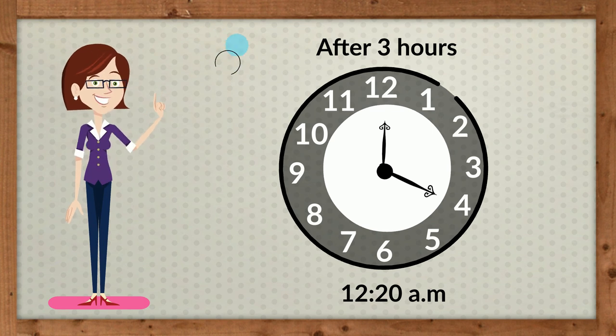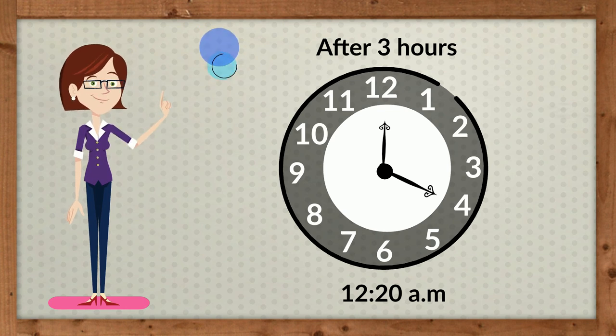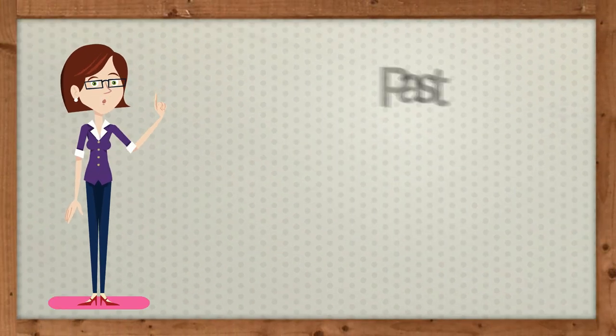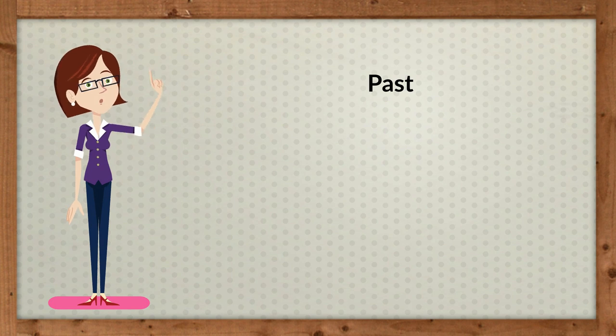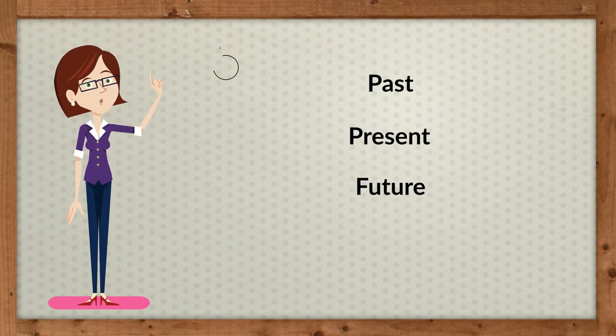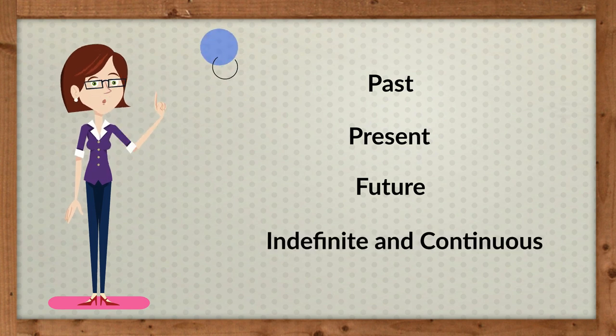This is called elapsed time, the system of those sequential relations that any event has to any other as past, present, or future, indefinite and continuous duration regarded as that in which events succeed one another.